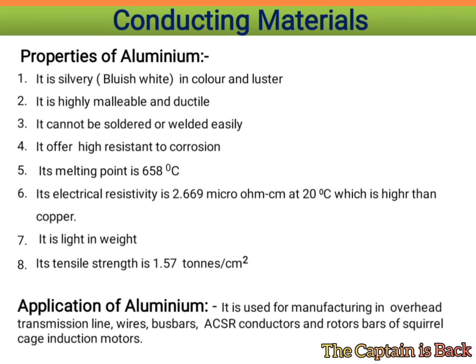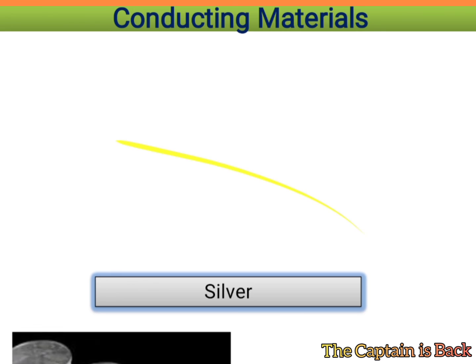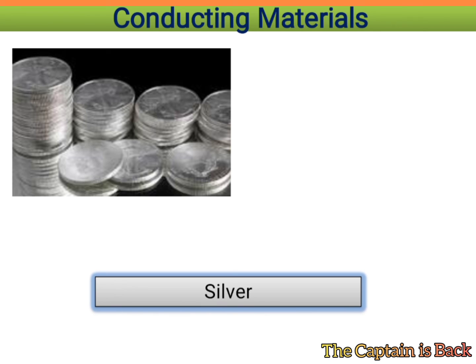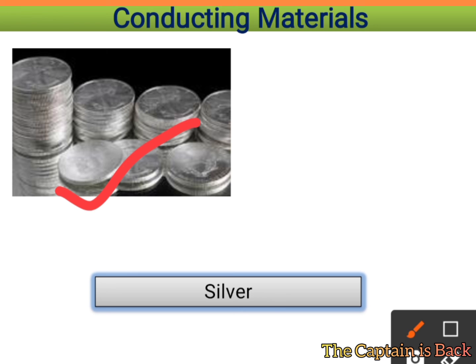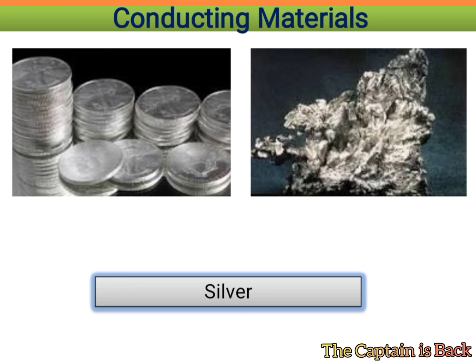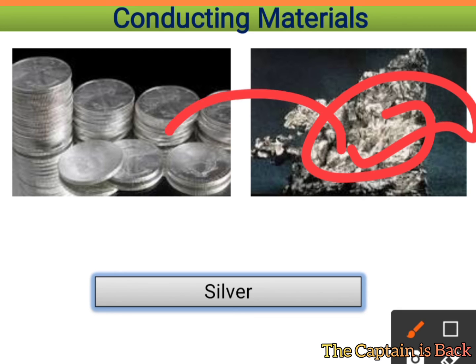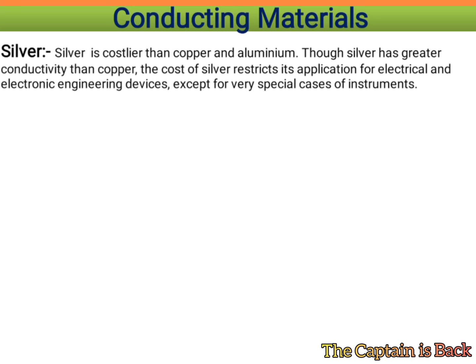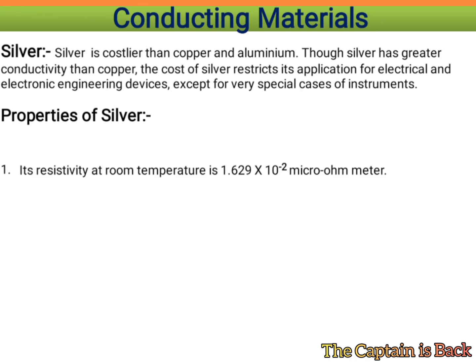Silver is shown in its crude form and as processed material in jewelry. Silver has greater conductivity than copper, but its high cost restricts its application in electrical and electronic engineering devices except for very special cases of instruments. Otherwise, silver is the best conductor one can have.